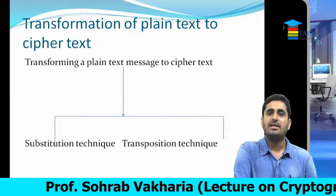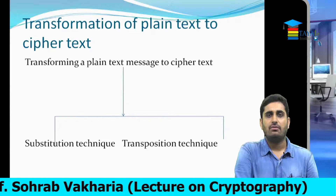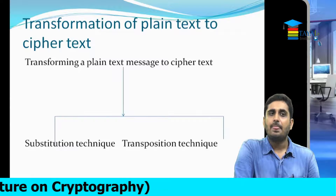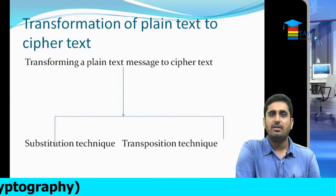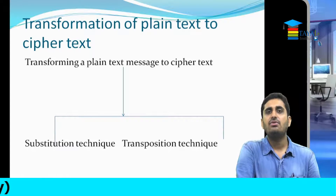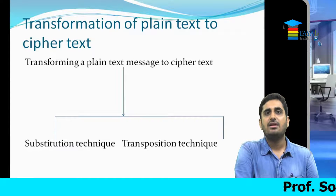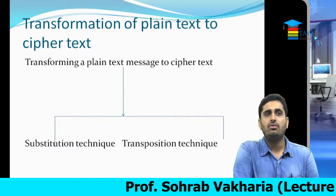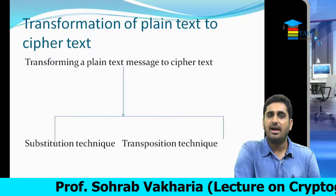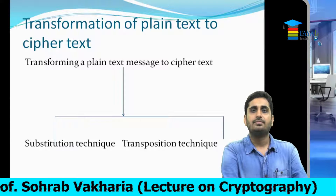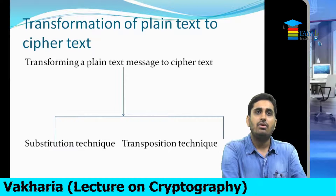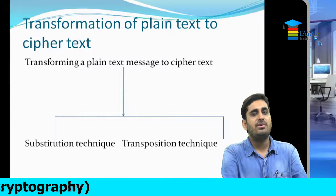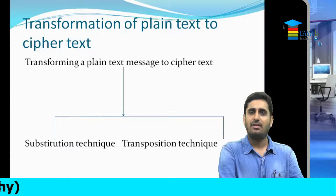For example, if Julius Caesar had to send a message to another king to call for help during war time, instead of writing 'please come and save me', he would change each and every character. In the word 'please', P would be replaced by one character, L by another, and so further. This mapping was known to the recipient — that person would know what is replaced by what, whether A is replaced by B or B by C.